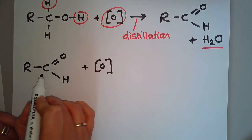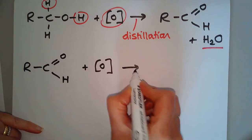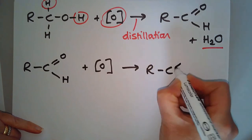If we start with the aldehyde and react it with some more oxidizing agent, we can change that into a carboxylic acid.